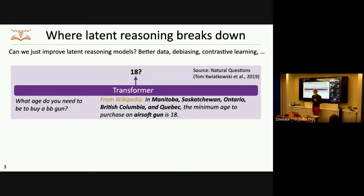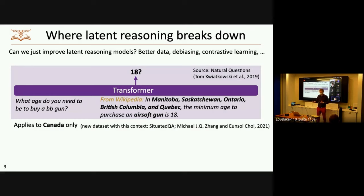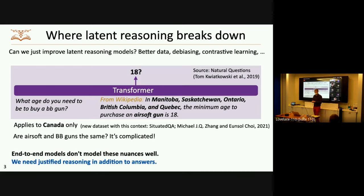We have a question here from Natural Questions: 'What age do you need to be to buy a BB gun?' And the answer labeled on Wikipedia is: in Manitoba, Saskatchewan, Ontario, British Columbia, and Quebec, the minimum age to purchase an airsoft gun is 18. So we can spit out 18 as the answer, or maybe the answer is some other number. But if you look at this, there's a big problem, which is that it only applies to Canada. Michael Zhang and Unsel from UT have a very nice paper at EMNLP called Situated QA introducing a dataset that incorporates this kind of extra-linguistic context in QA models. There's also the issue that we have 'airsoft gun' in the context and 'BB gun' in the question — are these the same things? I want more justified reasoning before I go out and buy a gun and break the law.